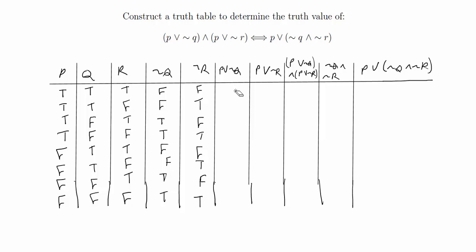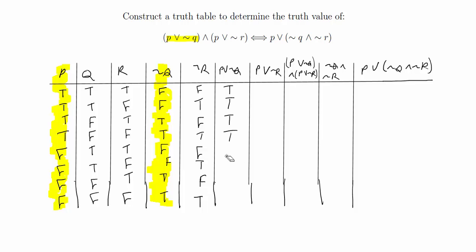For P∨¬Q, we look at the P column and the not Q column. Since this is an OR, if either P or not Q is true, the whole statement is true; it's only false if both are false. The first four rows are already true because P is true for those. Then for the last four rows, P is false, so we check not Q: false, false gives false, false; but not Q is true for the last two, giving true, true.